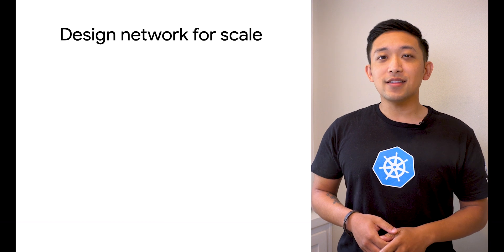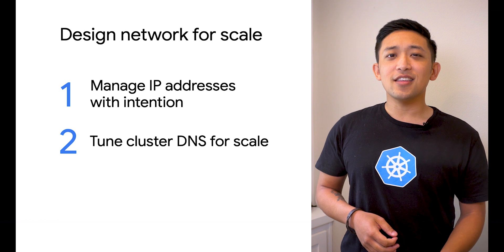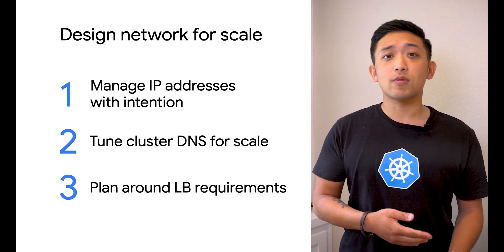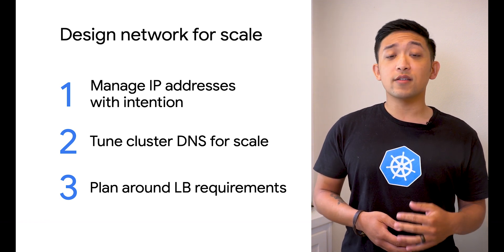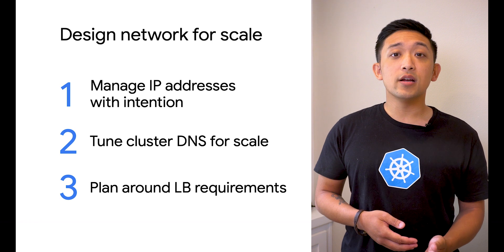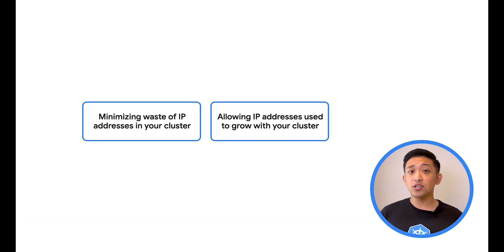Now let's talk about what we need to consider with care on everyone's favorite topic, networking. In GKE, there are specific practices you can use to handle potential issues around IP address management and DNS scalability. You should also be cognizant of what load balancers your tenants will require in order to prepare your cluster accordingly. At this scale, we'll have many workloads running in a single GKE cluster, and every single one of those pods gets an IP address. This can make planning around IP address allocation tricky, especially when considering that not wasting IPv4 address space is top of mind.